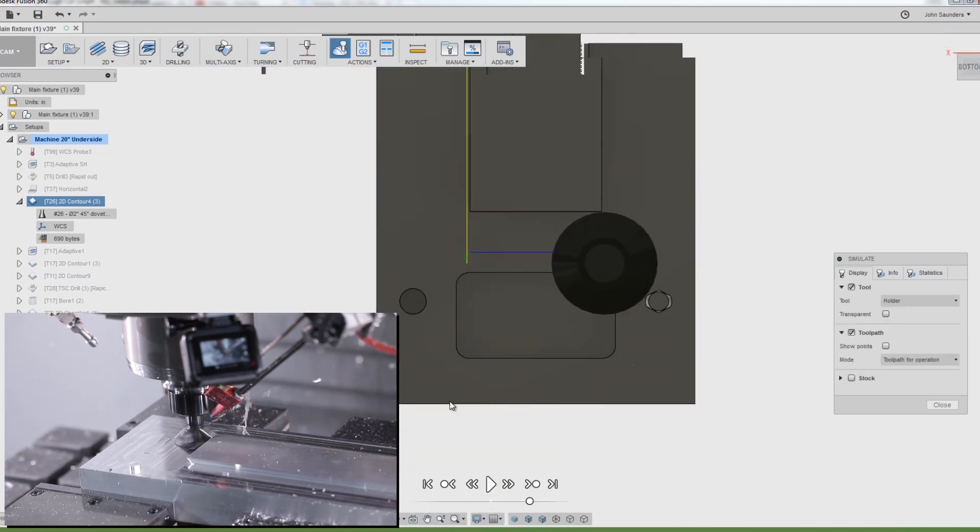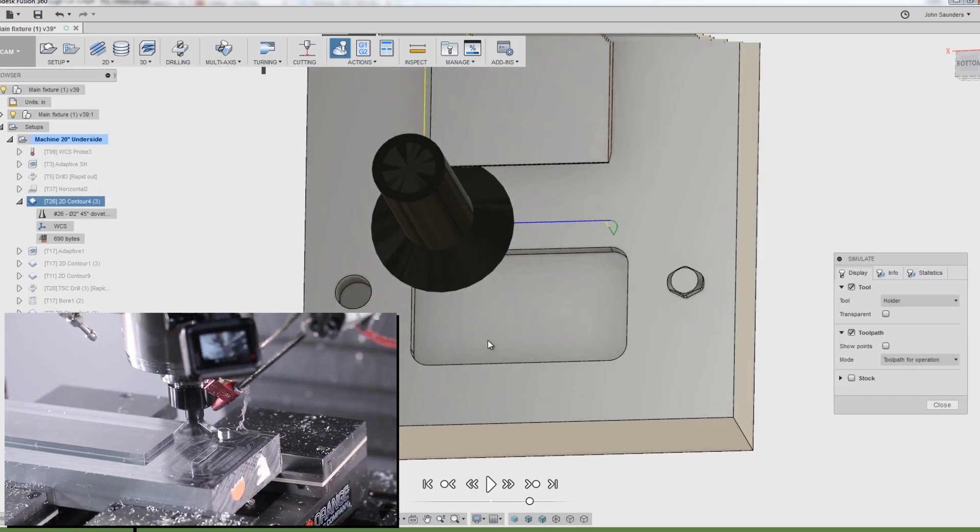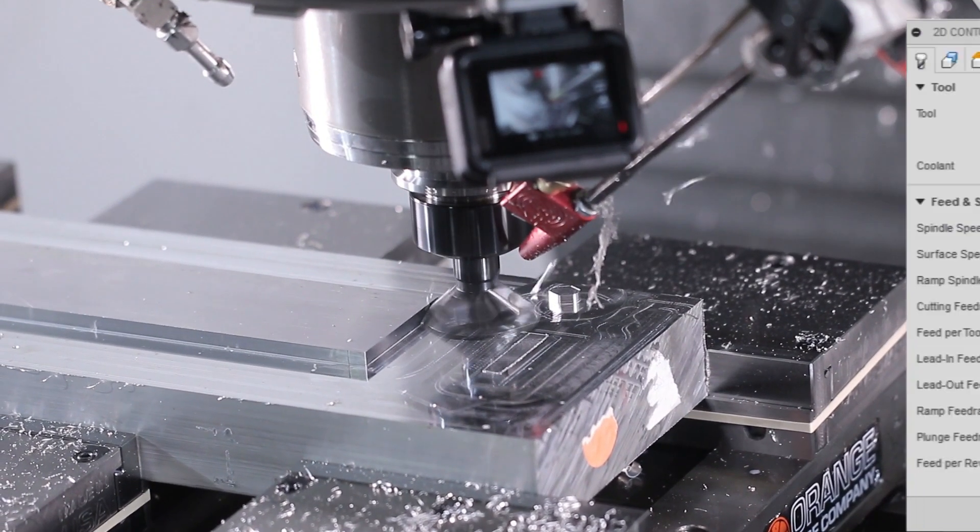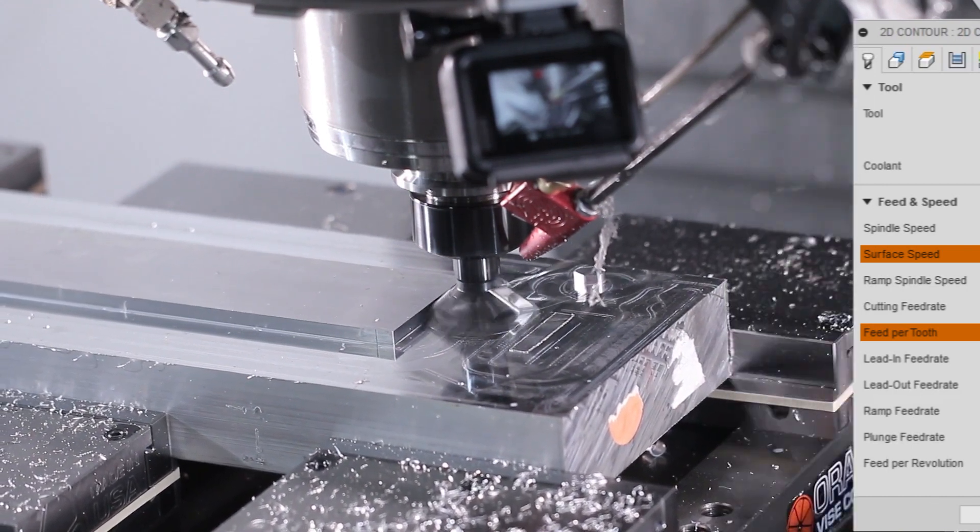You look at the simulation, you can see we're barely missing that pin as we plunge down, but close is good. Close is clearance. Running this at 2,000 surface feet per minute, 0.004 per tooth, about 45 inches a minute. One pass.